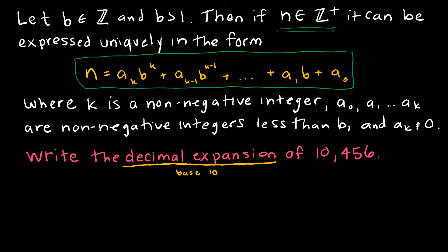This form says I'm going to take some value, a sub k, a sub k minus 1, multiplied by a base to a power. The base is going to be the same for each one. So if I'm doing a decimal expansion, then b is 10, my base is 10. If I'm doing binary expansion, then b is 2.